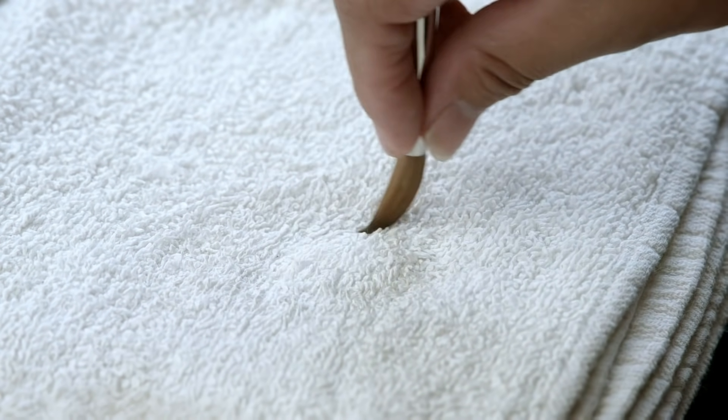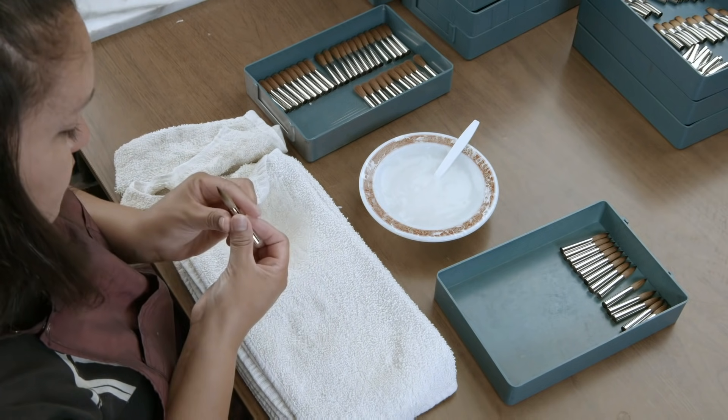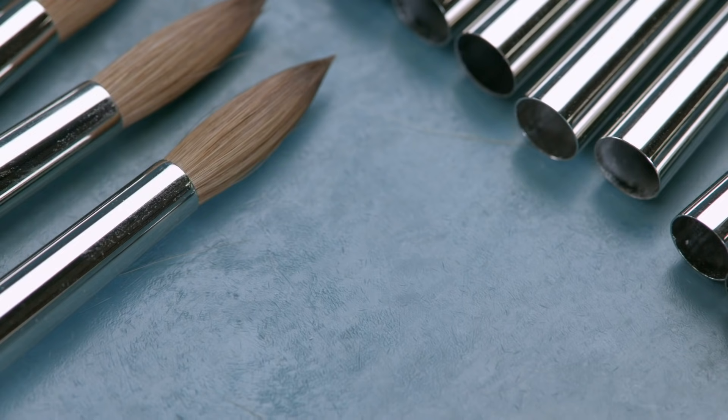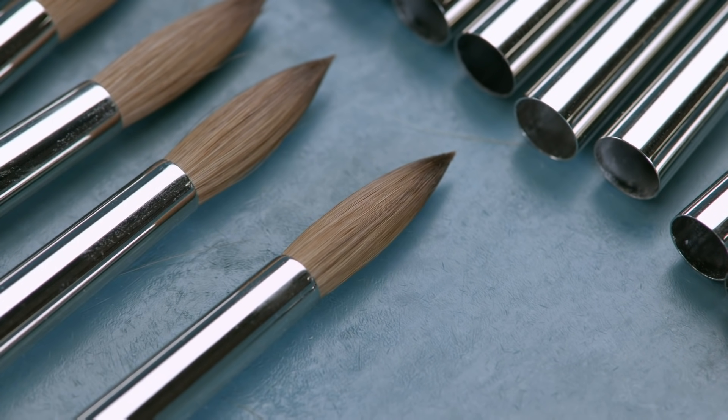To form its pointed shape, the head is rotated, then smoothed by hand. The starch dries overnight, locking in the shape.